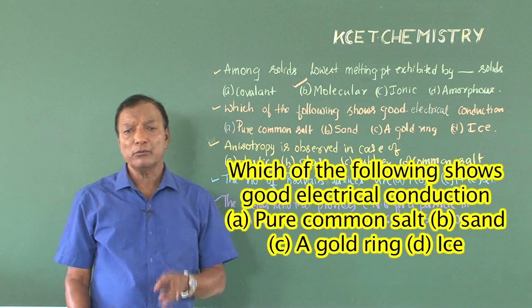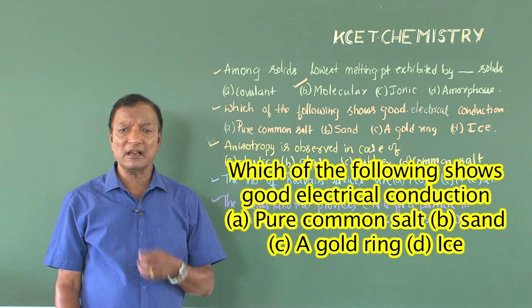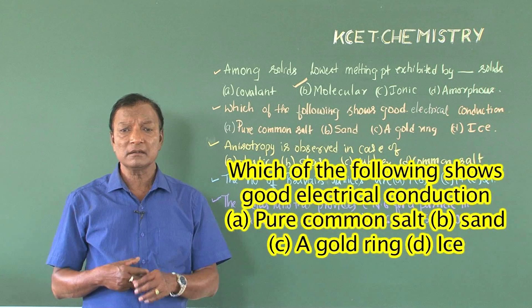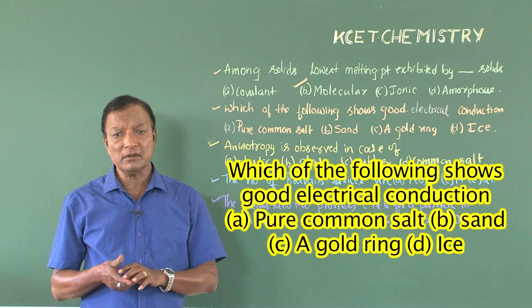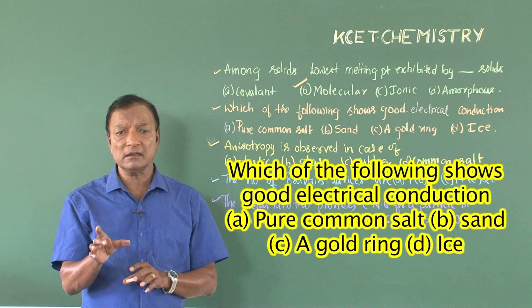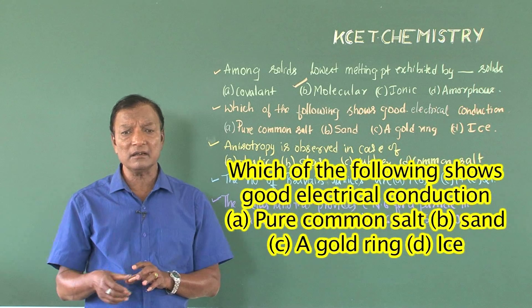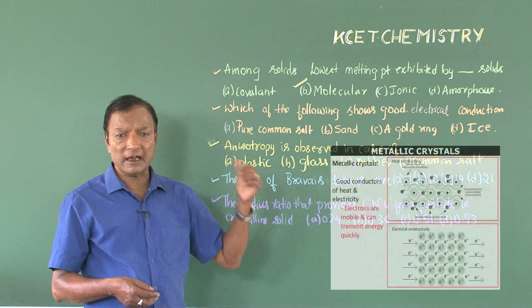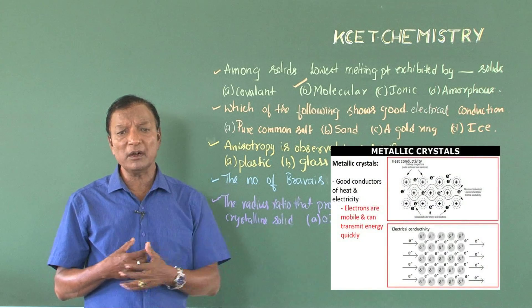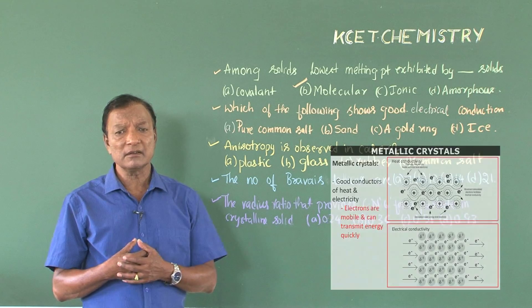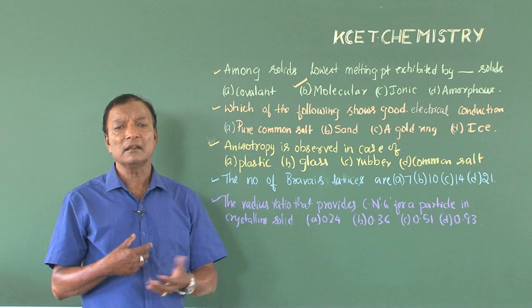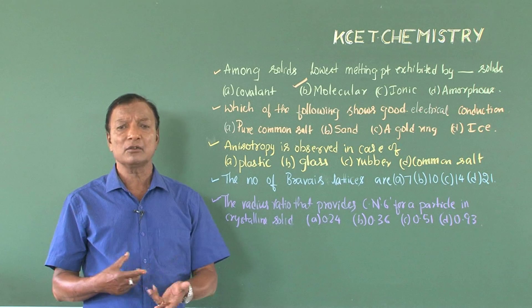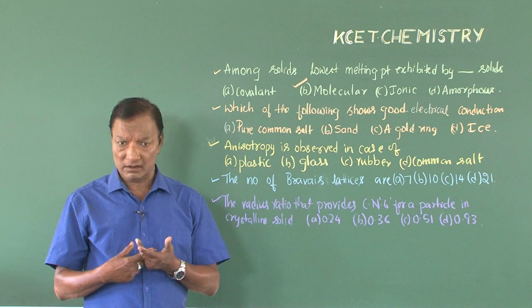Here we turn to the crystalline solids again—the four types. But remember one thing: among the four types, only one is having the electrical conduction and that is the metallic type because of the free movement of electrons. While the other three, they do not have the free movement of electrons nor they have the free movement of ions.